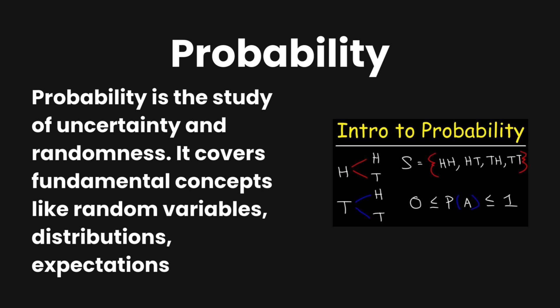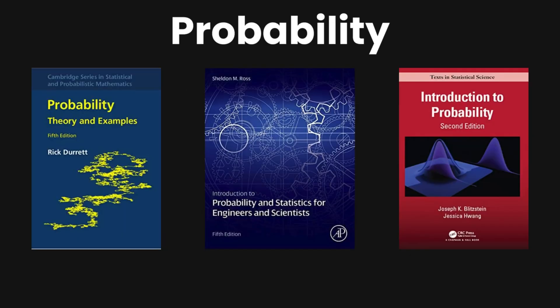Then about probability. Well, probability is really important. So probability is one of the most important things in quant finance. Of course, all concepts that I mentioned here are very important. Probability is one of the most important ones. Probability is the study of uncertainty and randomness. It covers fundamental concepts like random variables, distributions, expectations, and so on. There are a few books.